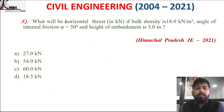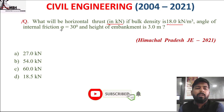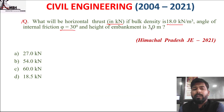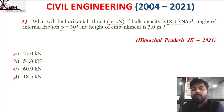Next question: what will the horizontal thrust be in kN if bulk density is 18 kN/m³, angle of internal friction φ = 30°, and height of the embankment is 3 m? Options: A 27, B 54, C 60, D 18.5.